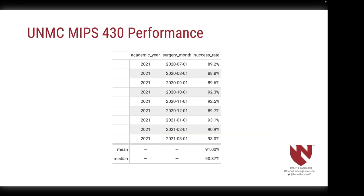So how is our institution doing? We went back and pulled data from the first nine months of academic year 2021 to use as a baseline. Our median during that time was that roughly 91% of patients got treatment consistent with the PONV guidelines. That's not bad, but we have room for improvement. As I look at these data, I see an outcome of interest and a time interval for each measurement — this looks like a perfect job for a run chart.